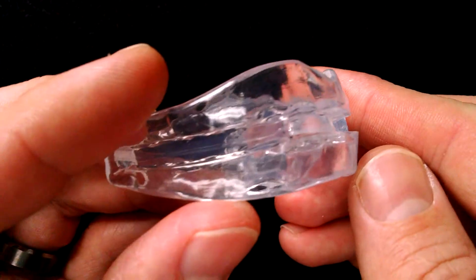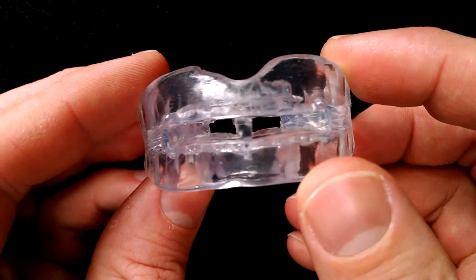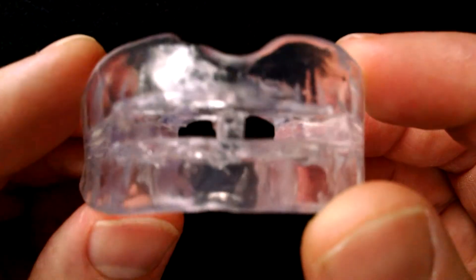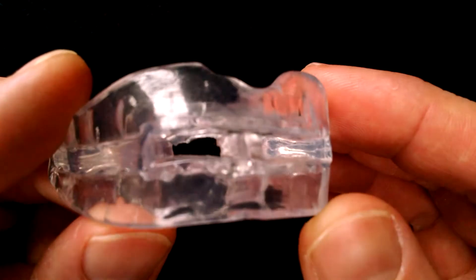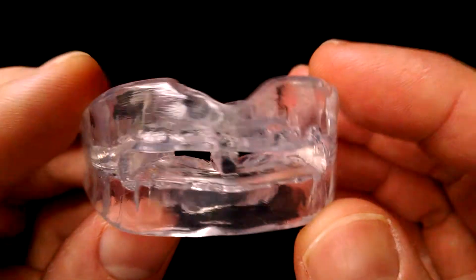The first thing you can notice about the Rip Snore is the fact that it has two fairly large air holes here at the front. So that's good if you're a mouth breather.